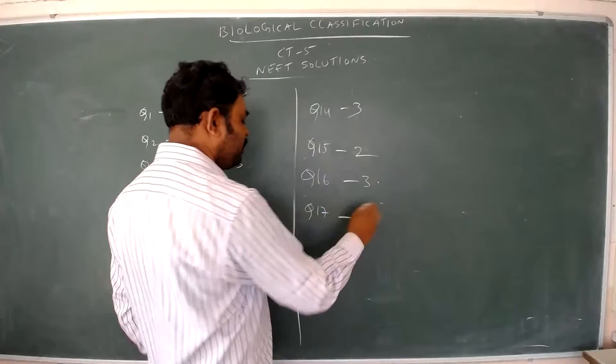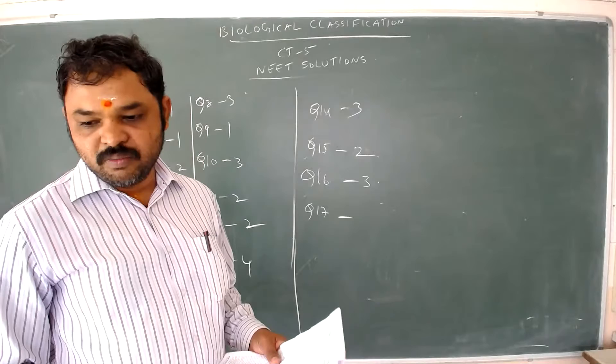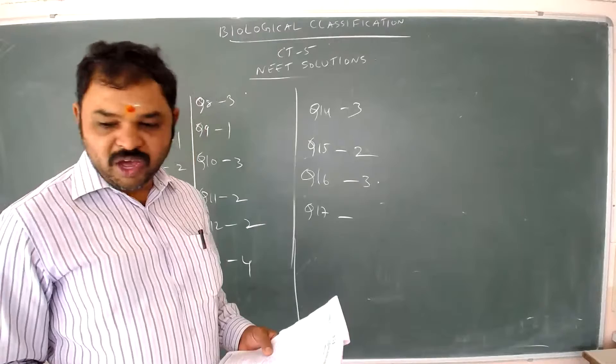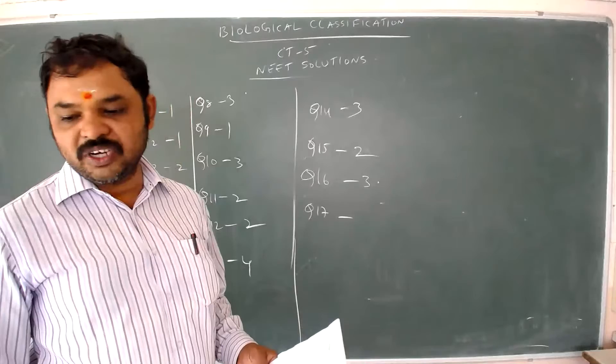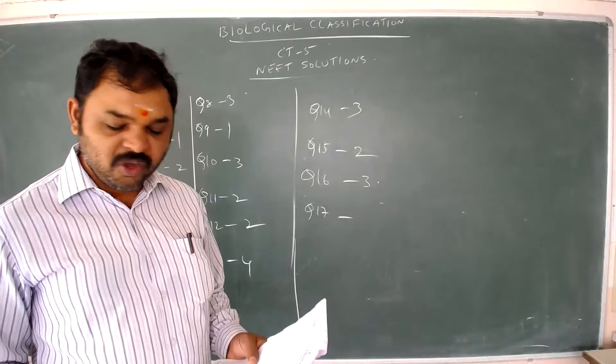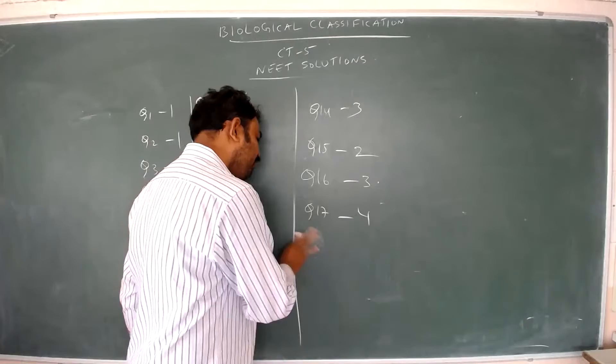Question number seventeen: which statement about mycoplasma is wrong? Mycoplasma cause disease in plants — correct. They are also called pleuro-pneumonia-like organisms — correct. They are pleomorphic — correct. They are sensitive to penicillin — wrong, because mycoplasma have antibiotic resistance and are not sensitive to penicillin. The answer is option 4.